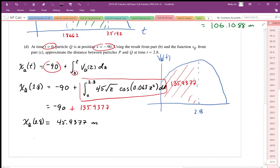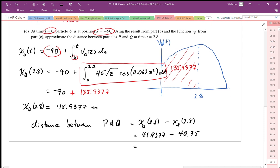So then the distance between the two points, P and Q. We find x of P at 2.8 minus x of Q at 2.8. From our previous problem, the position of Q at 2.8 is 45.9377. The position of P at 2.8 we worked out as an approximation of the area under the curve using trapezoids as 40.75. So the distance they are apart is going to work out to be 5.18777 meters, approximately.